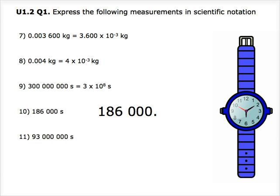Question 10: we have 186,000 seconds. We have to move the decimal point five times to the left to get a coefficient of 1.86. Thus, our final answer is 1.86 times 10 to the power of 5 seconds.